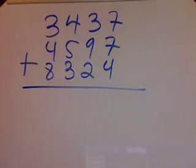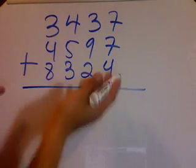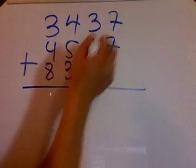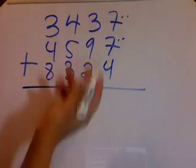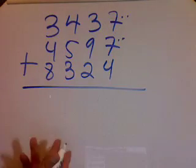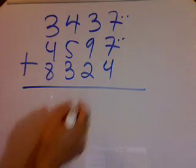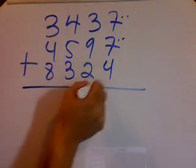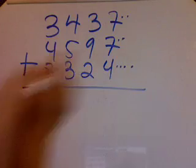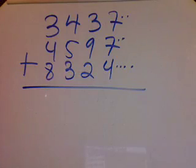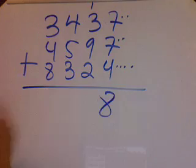Let's practice and see if we can find anything difficult. That's 2, that's 2, that's 2. 7 plus 7 is 14, plus 4 gives 18, so we write 18.